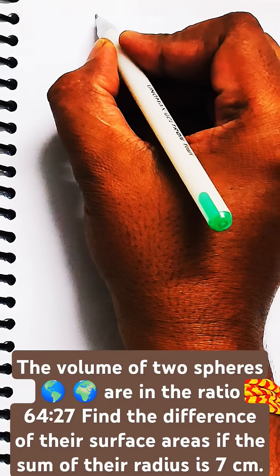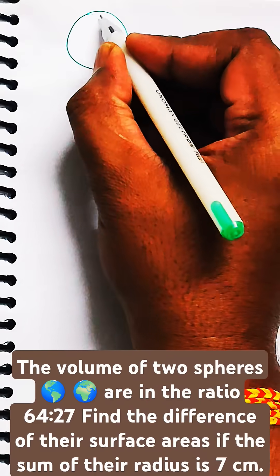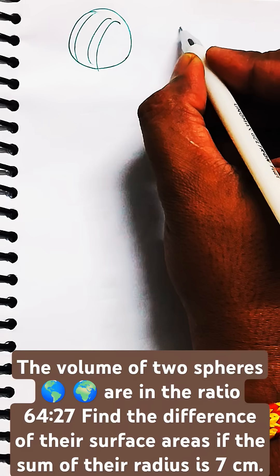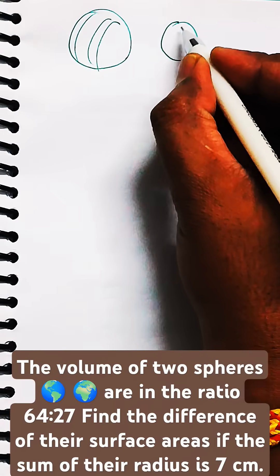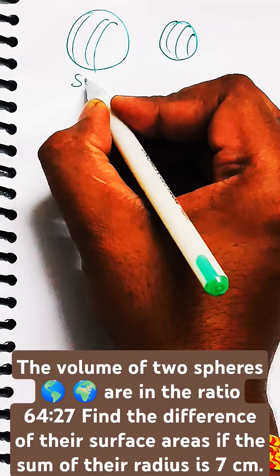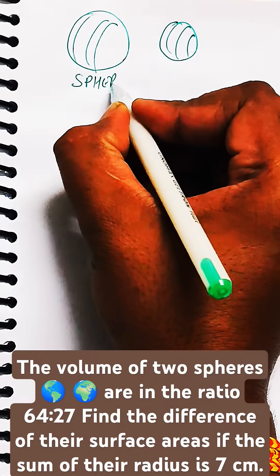This is a question from mensuration where three-dimensional objects, spheres, are given to you. There are two spheres—let's say this is the first and this is the second sphere.